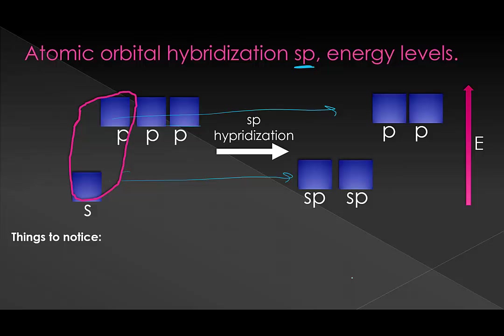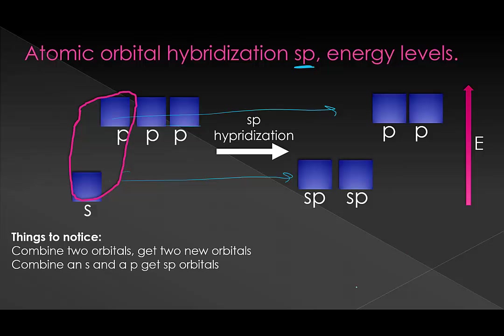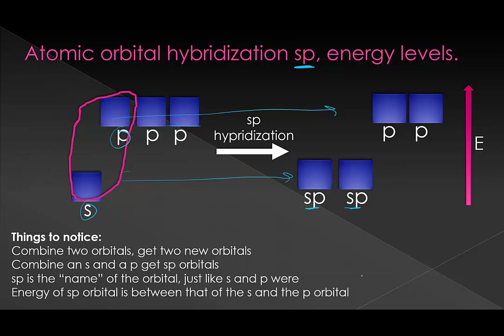We started with two orbitals and we get two orbitals. They're named after the orbitals they come from — s and p. The energy is somewhat between the two that it came from, so higher than an s orbital, lower than a p orbital. It's just another way of looking at the exact same thing.